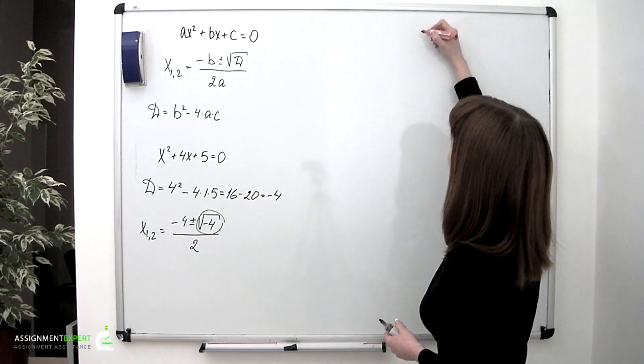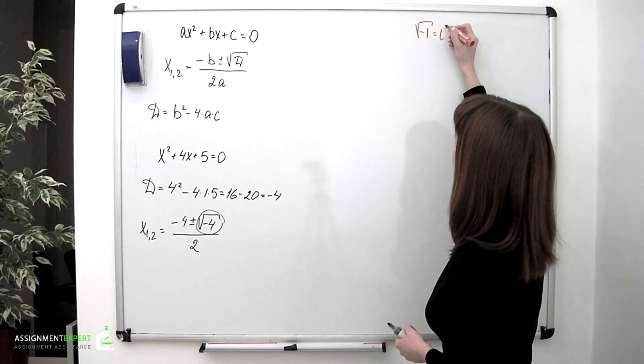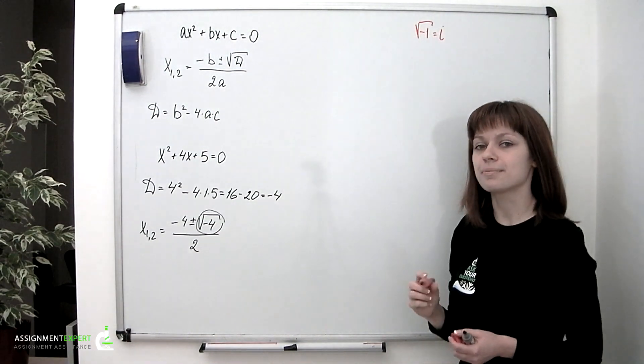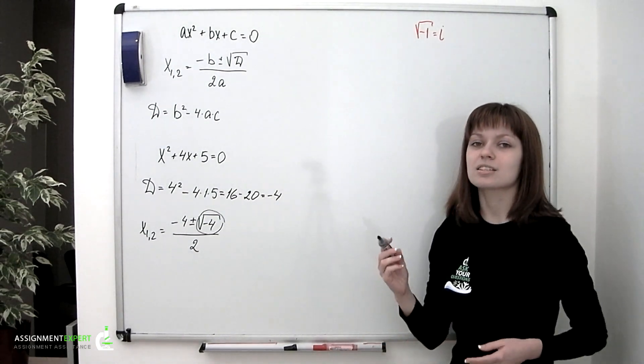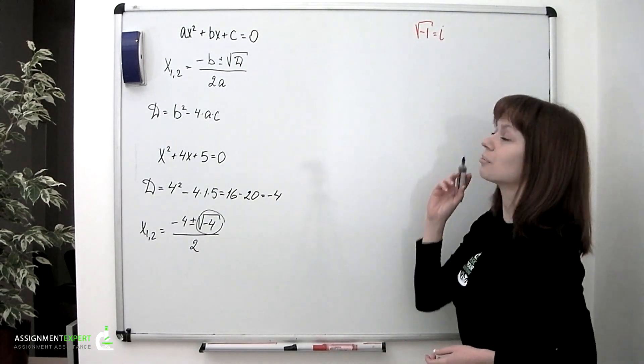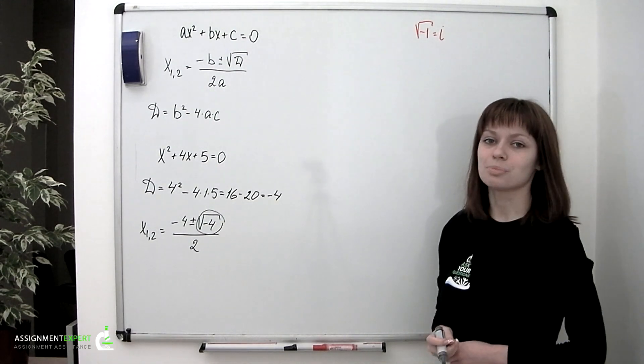So they started with denoting square root of negative 1 as i, i for imaginary, and called it an imaginary unit. In fact, any other symbol could have been used to denote an imaginary unit, but i seemed the most natural to appear there.